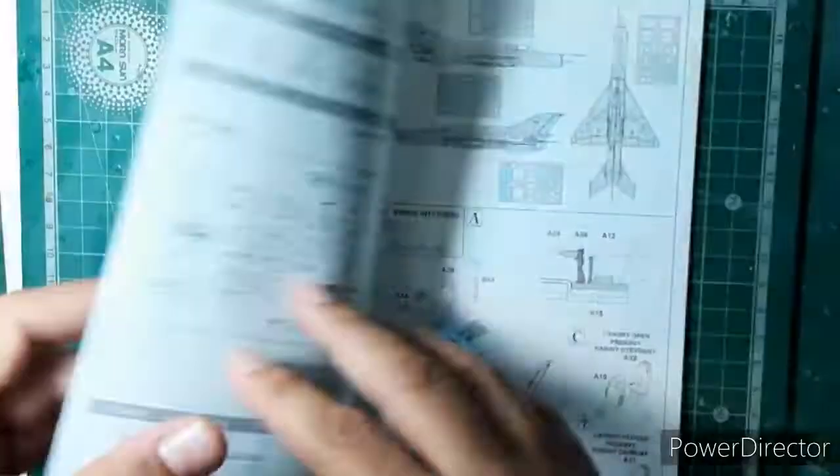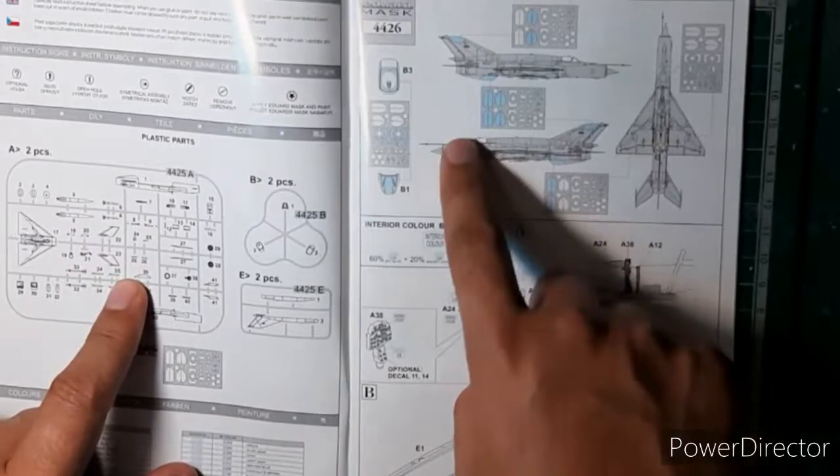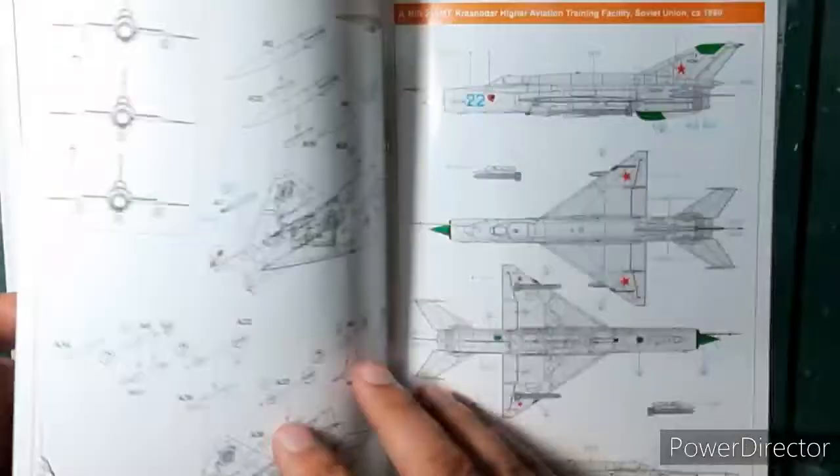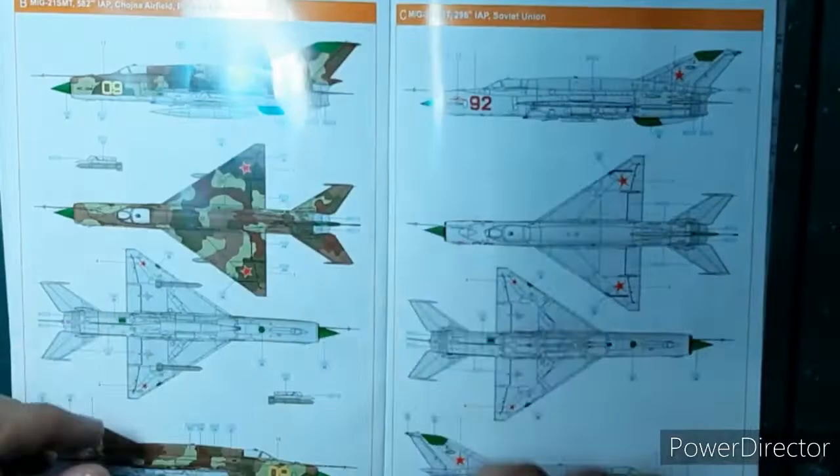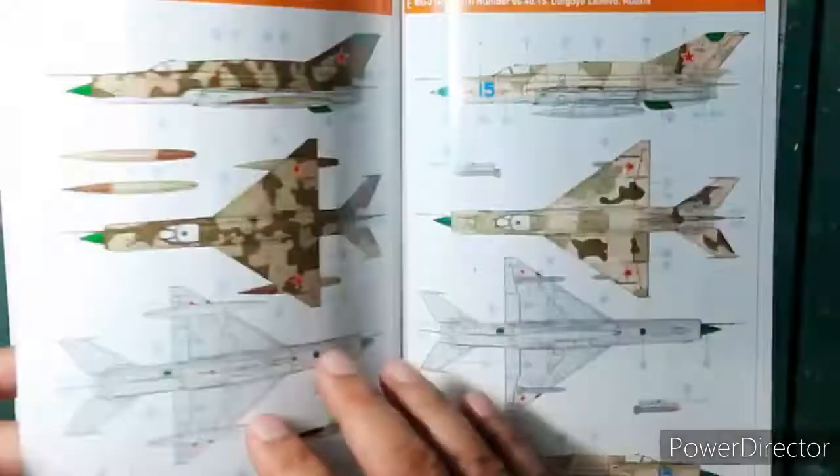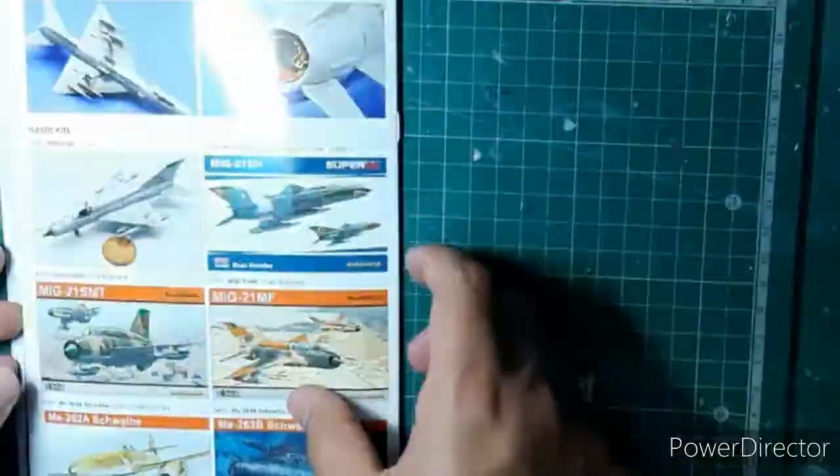This is the instruction sheet. It's got the sprue map and the masking guide, followed by the assembly instructions, and then these very interesting colored paint schemes which are really enticing.